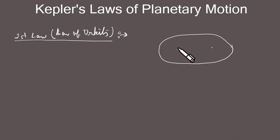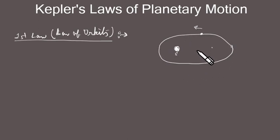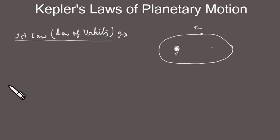The Sun is at one of the two foci — let's say the first one, marked as S — and the planets are moving around the Sun following this elliptical path. This is the first law, which talks about the structure of the planetary orbits.